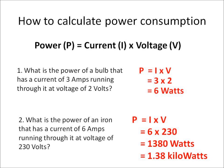Here's another question: what's the power of an iron that has a current of 6 amps running through it at a voltage of 230 volts? Again I use P = IV: P equals I times V equals 6 times 230 equals 1,380 watts, which is the same as 1.38 kilowatts.